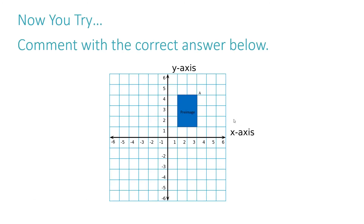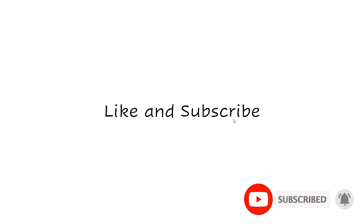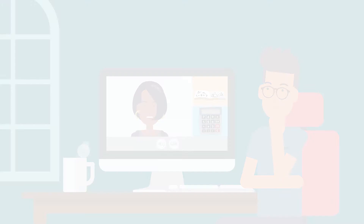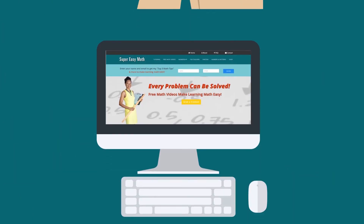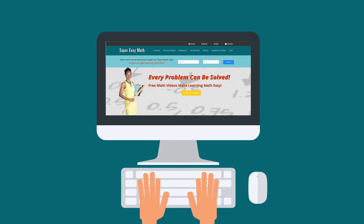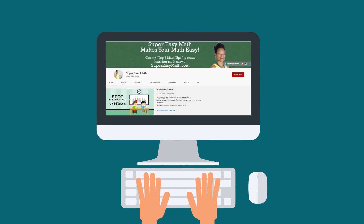Now you try — comment with the correct answer below, then head over to my website to see if your answer is correct. Rotate this image 90 degrees around the origin, then reflect it across the x-axis, and clarify what the A prime value would be for your final image. SuperEasyMath.com. Don't forget to like and subscribe. You can support this channel by donating to SuperEasyMath through PayPal — there's a link in the description below and on the SuperEasyMath YouTube cover photo.